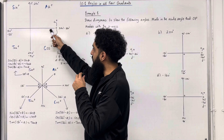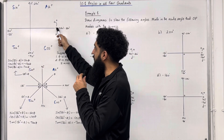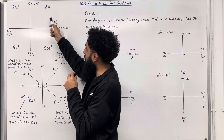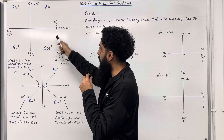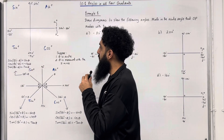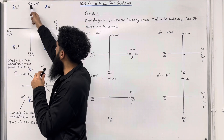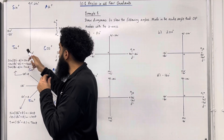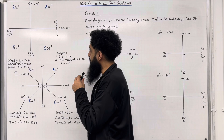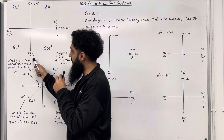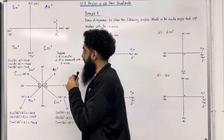Angles are always measured from the positive x-axis, so 0 degrees starts over here. If we go anti-clockwise, we are measuring positive angles. If we go clockwise, we are measuring negative angles. Anti-clockwise gives us 90, 180, 270, 360. Clockwise gives us minus 90, minus 180, minus 270, minus 360.